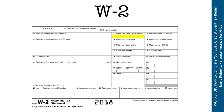This is what a W-2 looks like. It's the form that all employees in America receive, so it may be familiar if you had a compensatory-type job before entering graduate school. Your stipend, salary, or at least the part that came from an assistantship, will show up in box one.